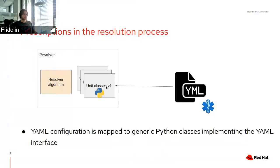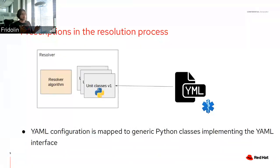These units can be versioned, and that means the prescription file can also be versioned. Just as in Kubernetes you have a Job in version 1, we can have a pipeline unit called Boot in version 1 in a prescription file. These unit classes understand how these versions should be interpreted, so we have Python classes that abstract away how the YAML file is read and interpreted.